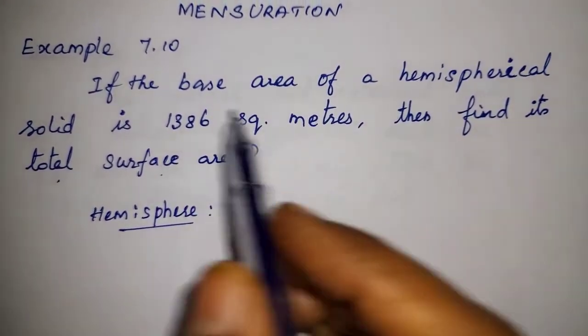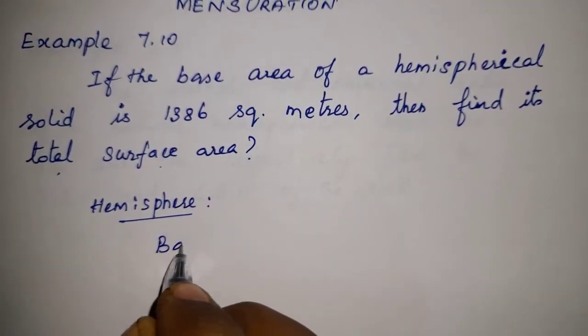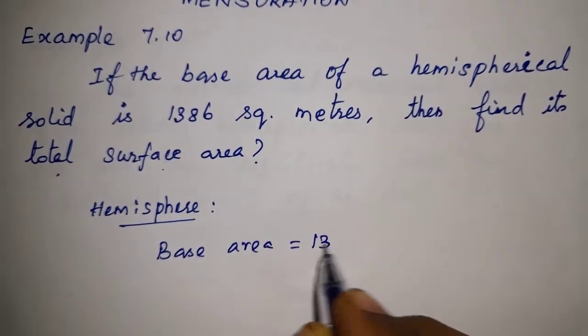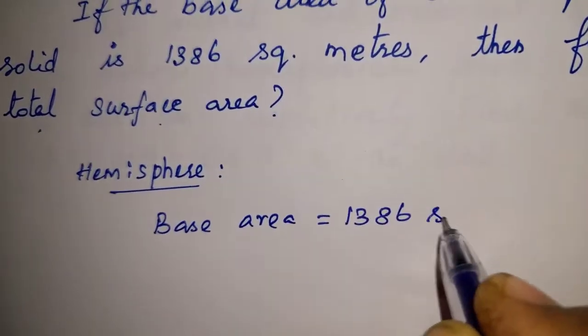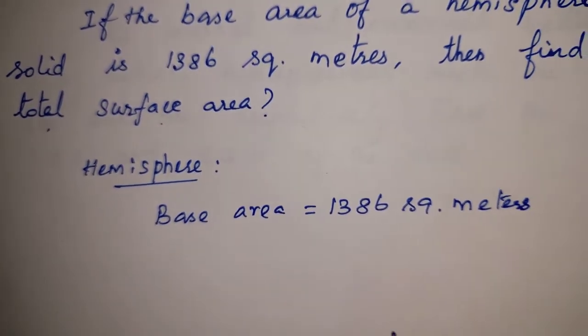So, given detail is base area of hemispherical solid. Base area is equal to 1386 square meters. Okay, the hemisphere is here.